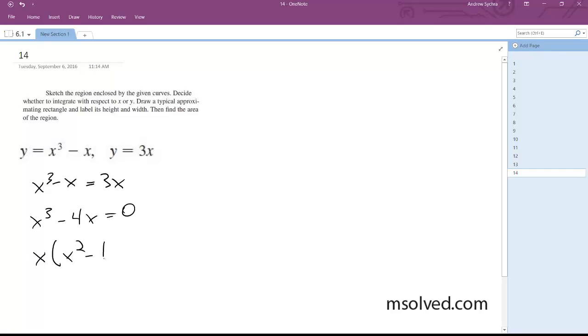x squared minus 4 equals 0, and we get x quantity x plus 2, x minus 2 equals 0. So our intersection points are going to be negative 2, 0, and 2.